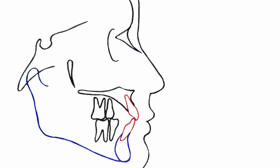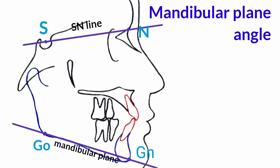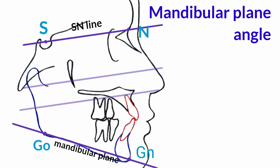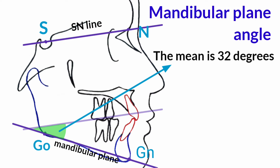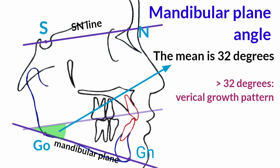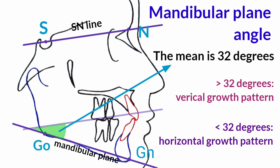The mandibular plane angle is formed by relating the mandibular plane to the S-N line. The mean for this angle is 32 degrees. A larger mandibular plane angle suggests a vertical growth pattern, and a smaller mandibular plane angle suggests a horizontal growth pattern.